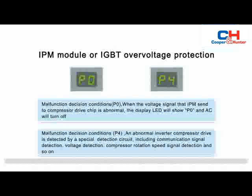Malfunction Decision Conditions — P0: When the voltage signal that the IPM sends to the compressor drive chip is abnormal, the display LED will show P0 and the air conditioner will turn off.